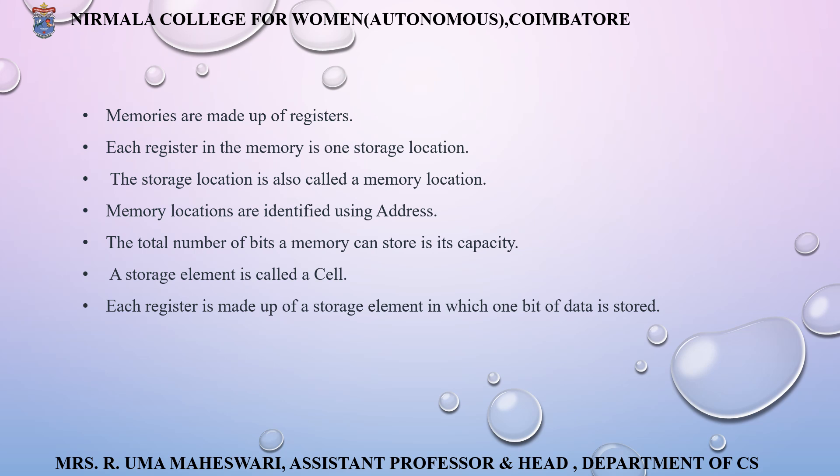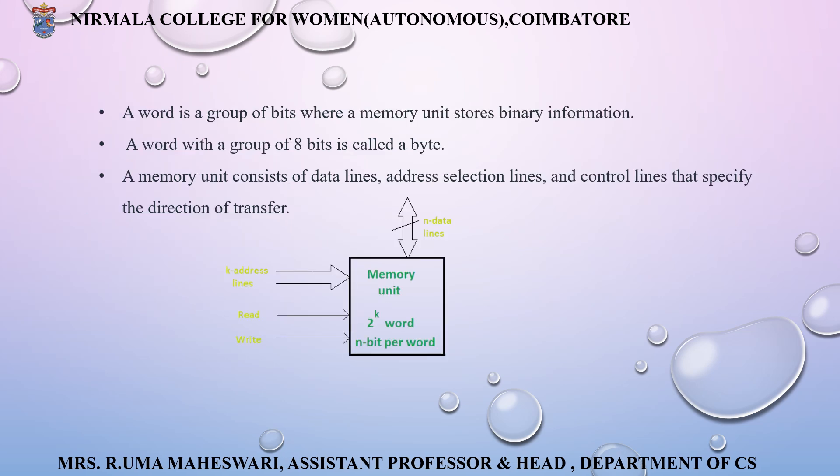Memories are actually made up of registers. Each register is a memory with one storage location. The storage location is also called a memory location, which can be identified by its address. The total number of bits a memory can store is its capacity. An element which is stored in a memory is also called a cell.